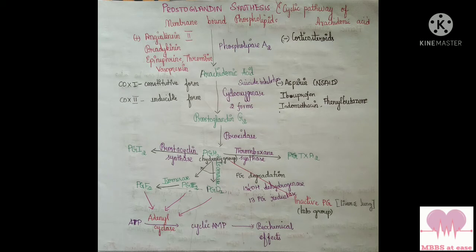Prostaglandin H2, when acted upon by isomerase enzyme, gives PGE2 and PGD2. PGE2 on further action of reductase gives PGF2. All these three prostaglandins act on adenylyl cyclase to convert ATP to cyclic AMP, which is used in biological effects. Prostaglandins are locally acting hormones.